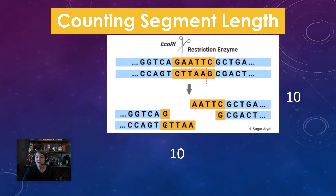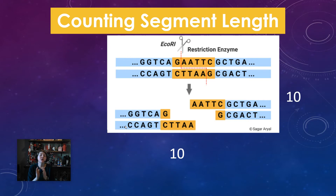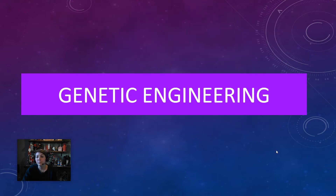Over here, the longest side is on bottom. We count 1, 2, 3, 4, 5, 6, 7, 8, 9, 10 — this is also 10 units long. So again, restriction enzymes are used to cut DNA and they either cut DNA with a sticky end or a blunt end. Next, we're going to talk about different applications in genetic engineering.